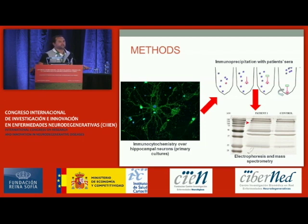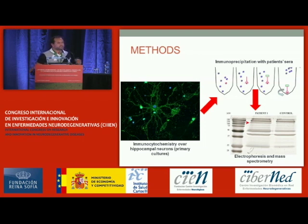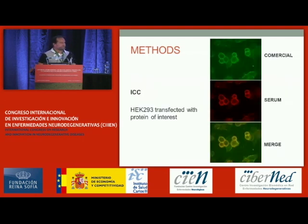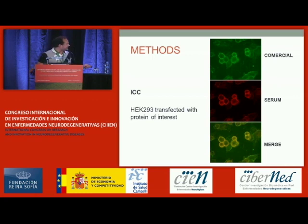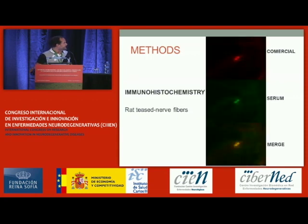If patients reacted against neurons by immunocytochemistry, we immunoprecipitated with patient sera and hippocampal neurons. The precipitate was run on an electrophoresis gel, and if there were differential bands between patients and controls, we excised the band and sent it to mass spectrometry. If any protein was considered relevant, we confirmed the reactivity in HEK cells transfected with the protein of interest, and then confirmed reactivity against relevant structures in peripheral nerve, in rat teased nerve fibers.